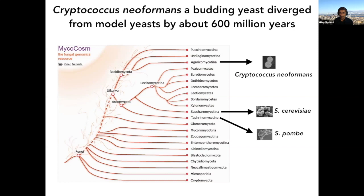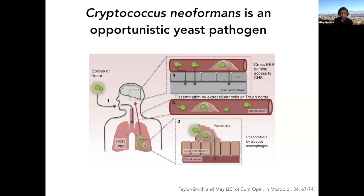Cryptococcus is an encapsulated budding yeast that can secrete a polysaccharide capsule under the right conditions. It's also an important human pathogen — the most common cause of fungal meningitis in humans. We all inhale it from the environment, but we clear the infection if we have T cells. If you lack T cells, the organism can grow within macrophages, translocate into the bloodstream, disseminate, and even cross the blood-brain barrier to cause a chronic meningoencephalitis, which is uniformly lethal if untreated.